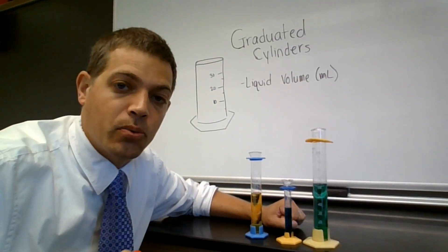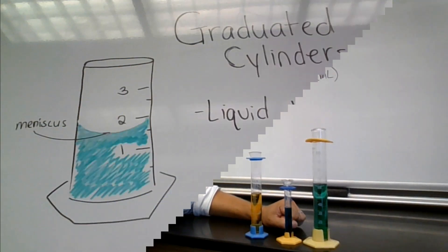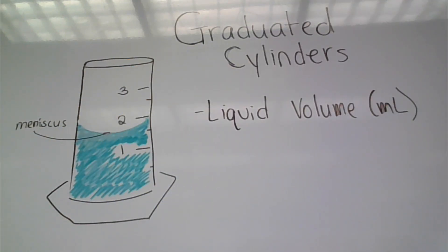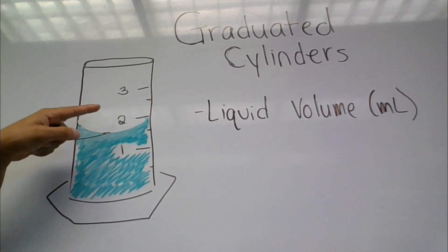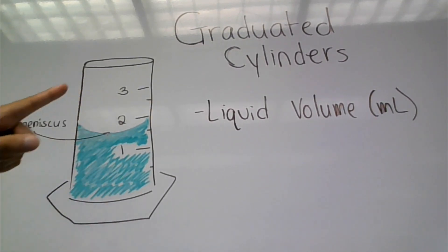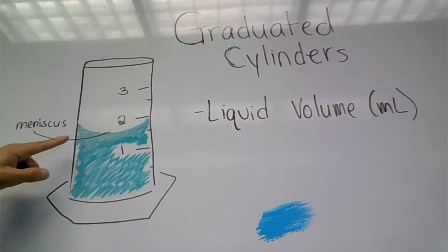Now let's take a look at how to use one. Take a look at the numbers. I want to show you this because not all graduated cylinders have the same numbering system. In this case, we have one milliliter, two milliliters, and three milliliters. We look at the bottom of the meniscus.